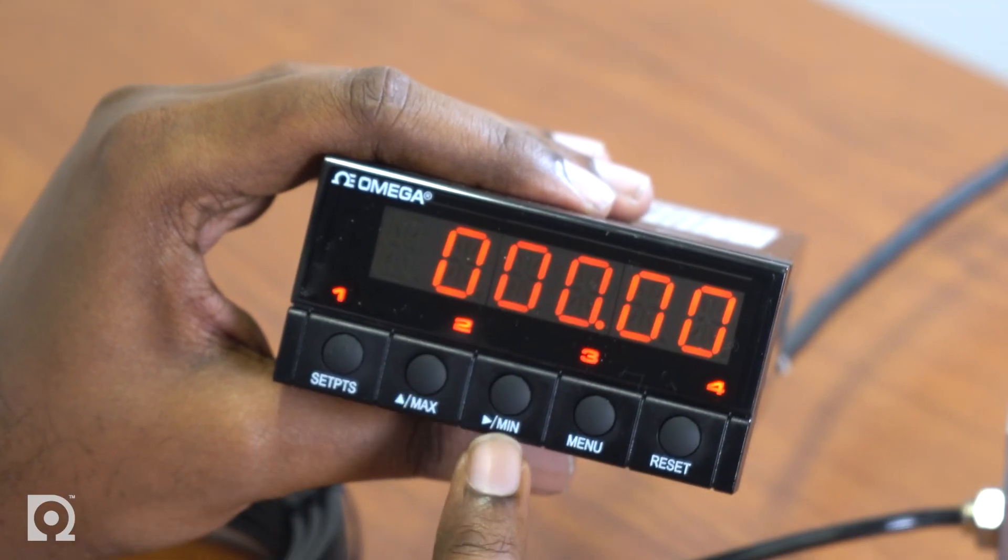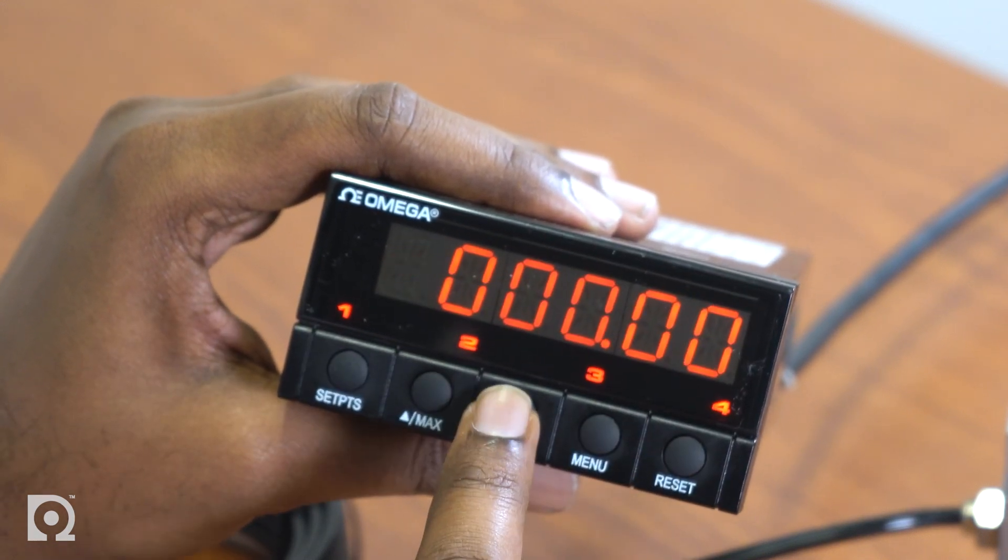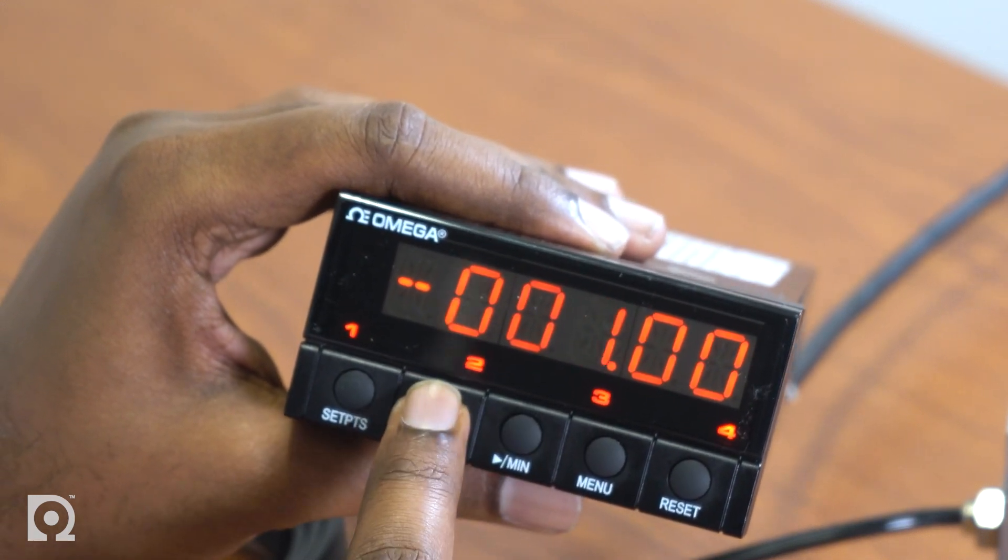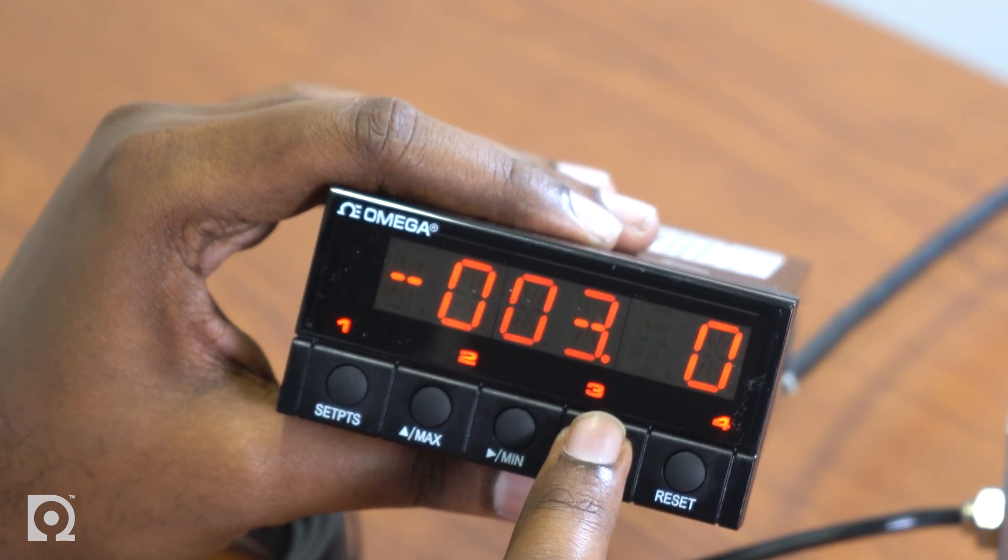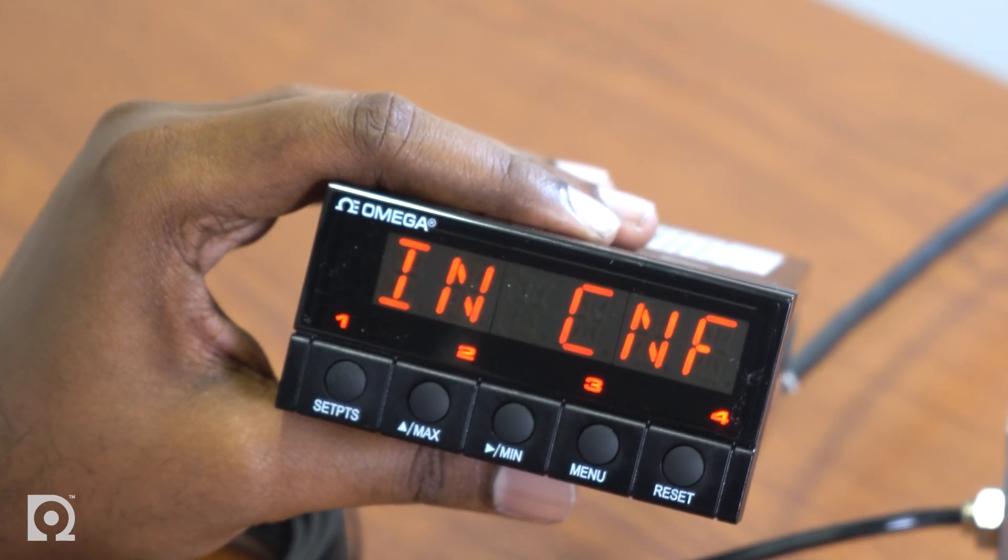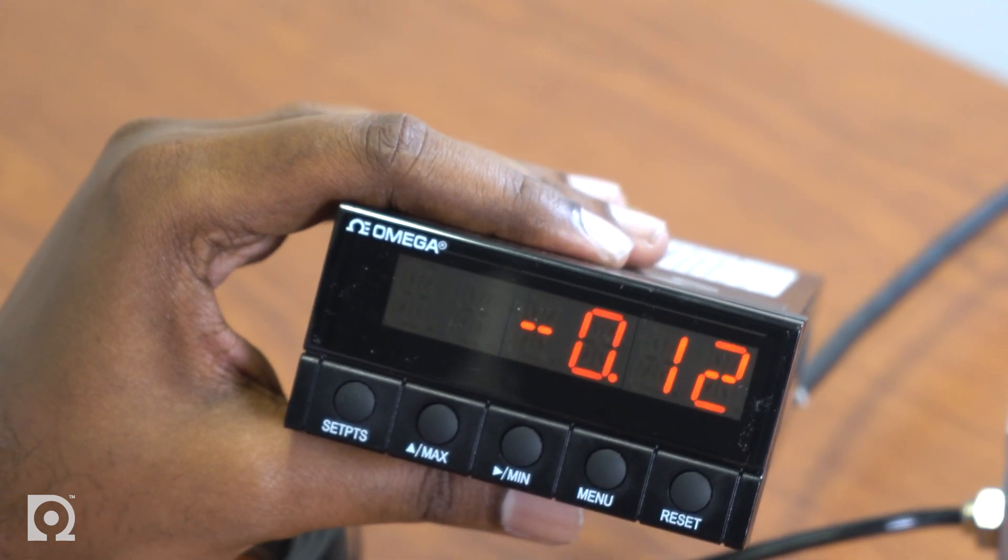So I'm going to put negative three point eight over here in RDG OF. Press the min button to scroll through the digits. Use the max button to change the value of the digit. So I'm going to set it to minus three point eight. Press the menu button to store it. It'll flash stored. Press the reset button twice to go back to run mode.